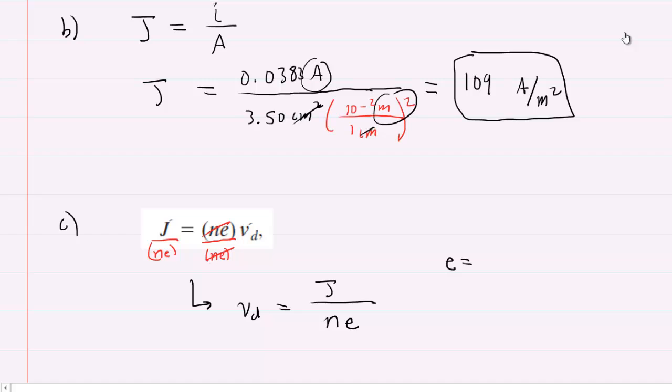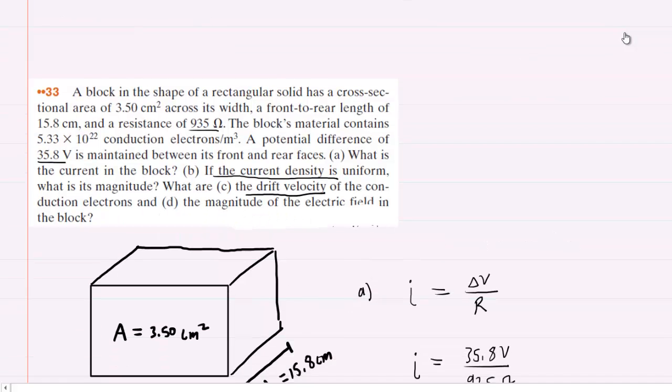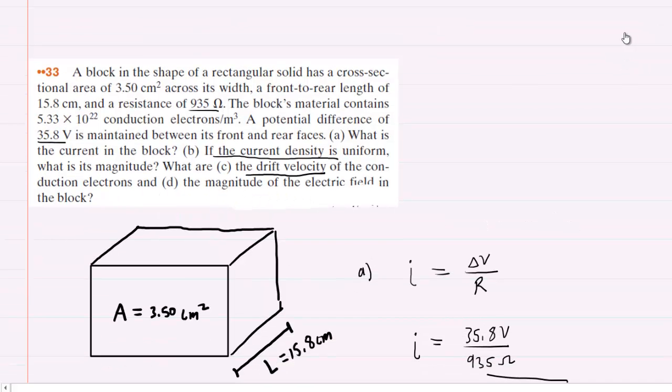We know that E is the elementary charge with a value of 1.6 times 10 to the minus 19th Coulombs. N is a quantity that's given in the question. The block contains 5.33 times 10 to the 22 conduction electrons per meter cubed. That quantity, the number of conduction electrons per meter cubed, is N.